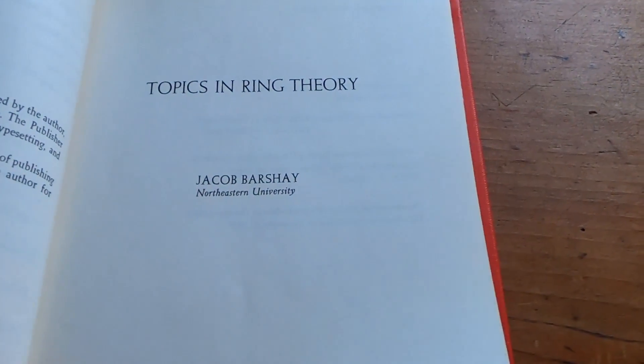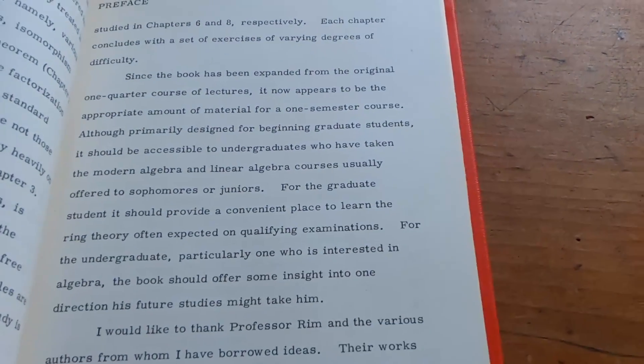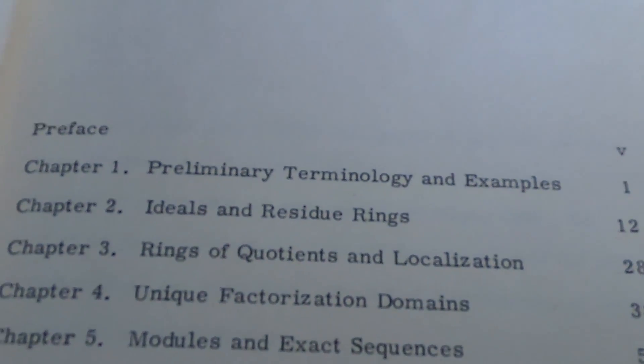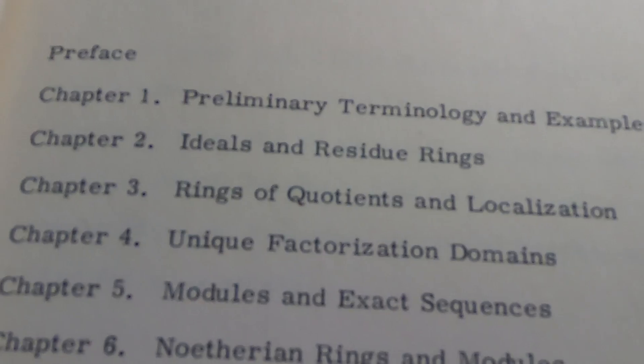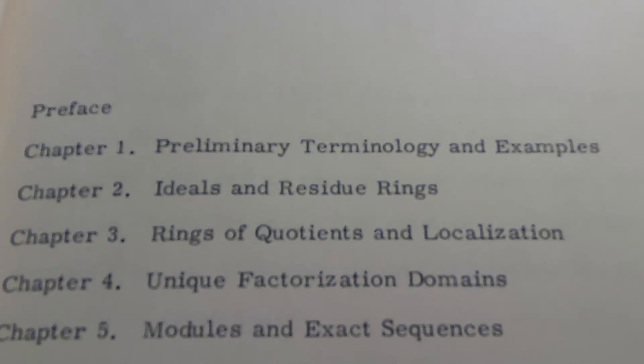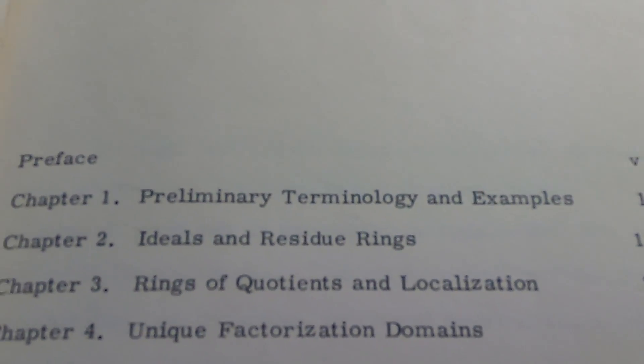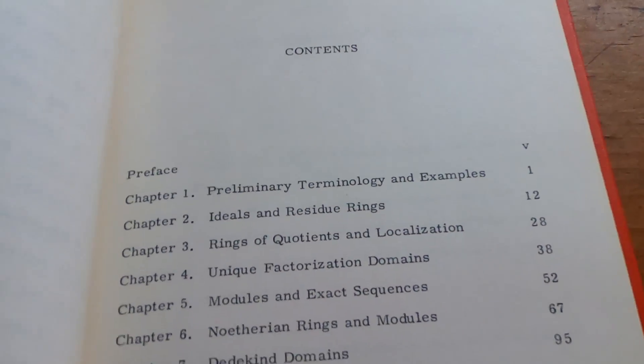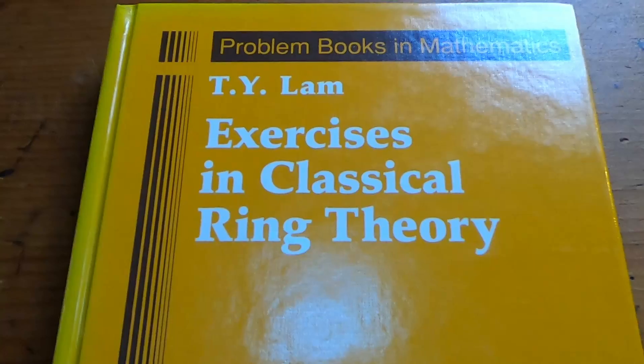This book is called Topics in Ring Theory and it's written by Beachy. This is a graduate-level book on ring theory — not a beginner book. If you're looking to learn more ring theory and you have some abstract algebra knowledge, it's a good choice. Some of the topics are more advanced than what you'd see in a regular abstract algebra course, but it's a good book and I've read portions of it.